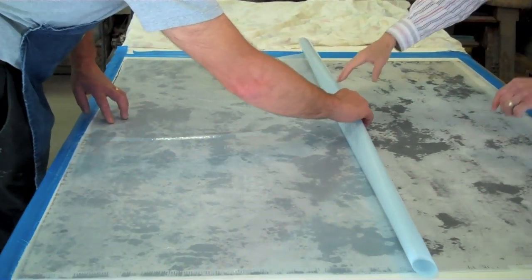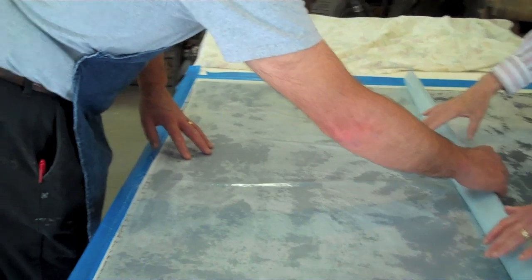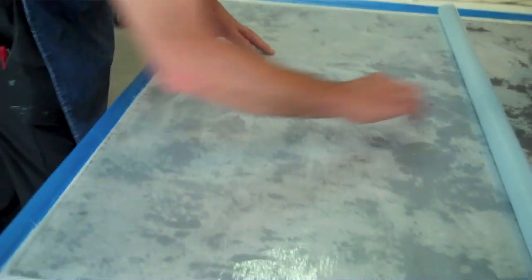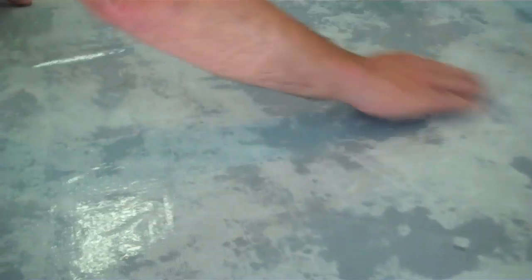The next layer is the release material. This is the plastic that's got the tiny, tiny holes. You probably can't see them in it, which allows the excess epoxy to be pulled through into the bleeder.